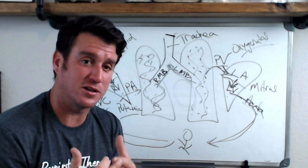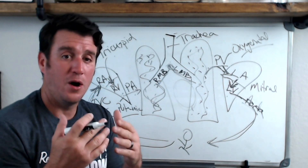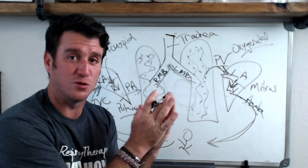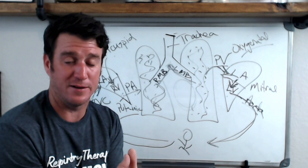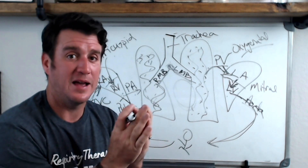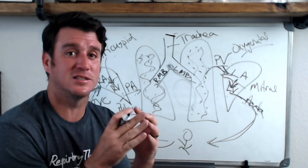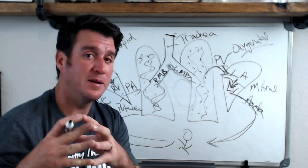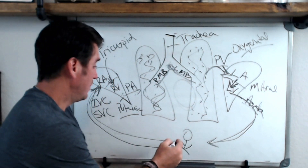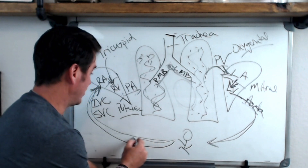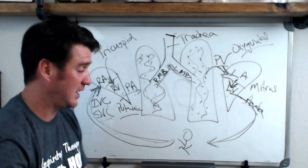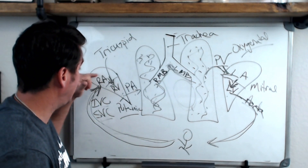The point of all of this is understanding how blood flows through the heart and understanding that between the right side and the left side of the heart is pulmonary blood flow, and between the left side and the right side is systemic blood flow. Let me recap quickly. Blood flow from the body returns via the IVC and the SVC — the inferior vena cava and the superior vena cava — to the right atrium.